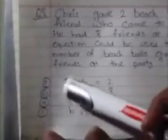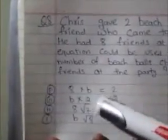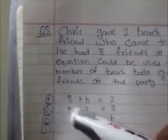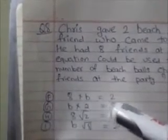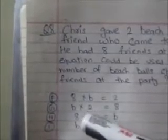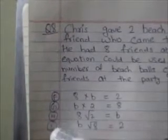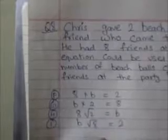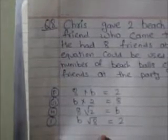The options are: F — 8 × B = 2; G — B × 2 = 8; H — 8 × 2 ÷ 2 = B; and I — B ÷ 8 = 2.